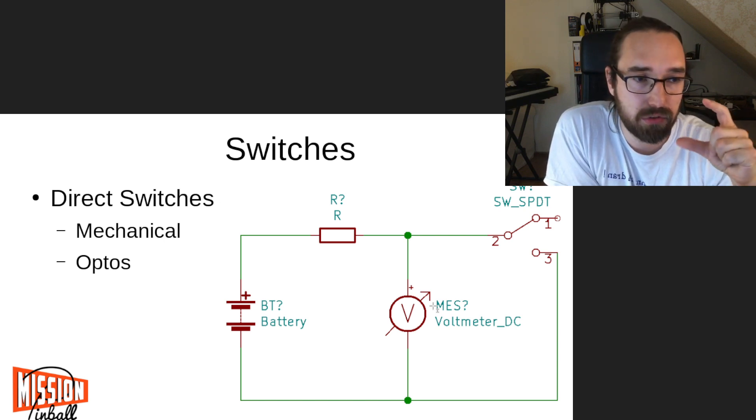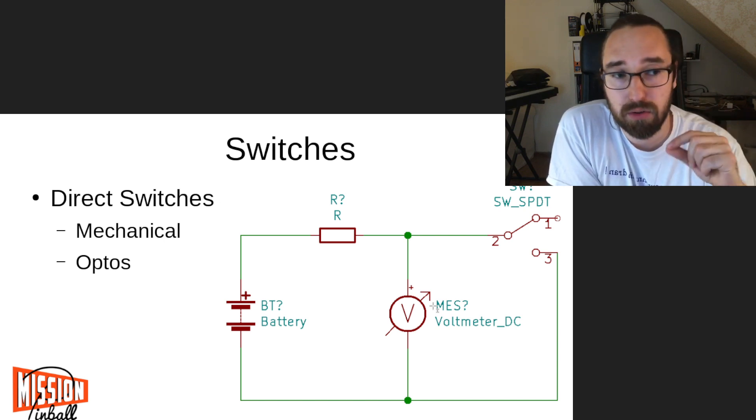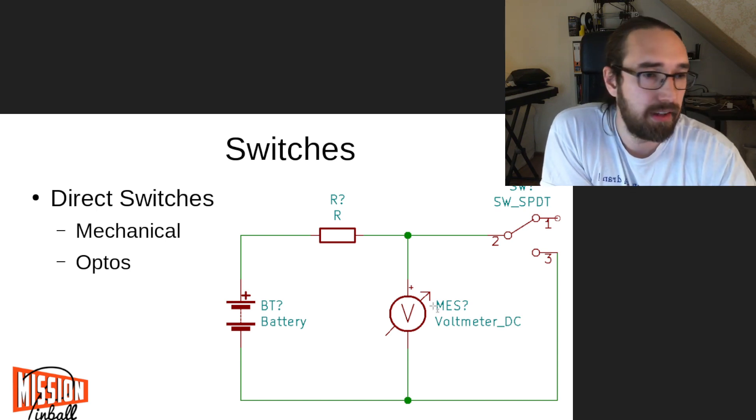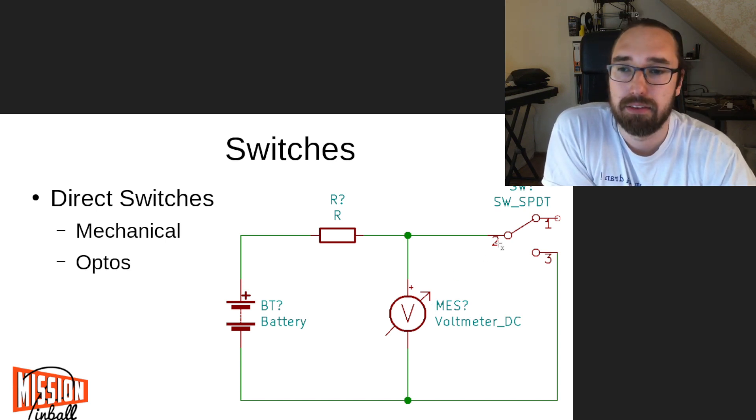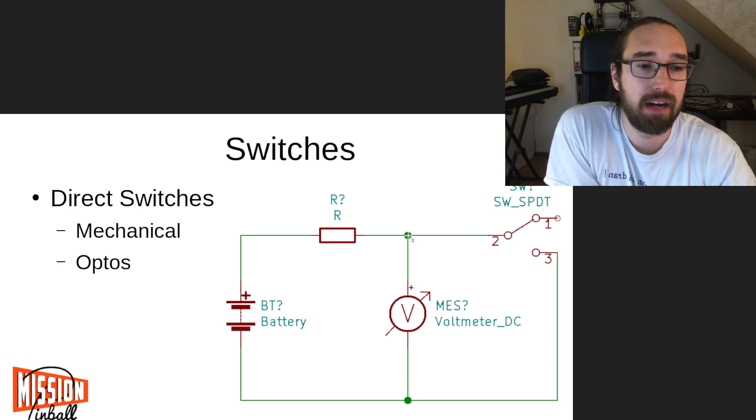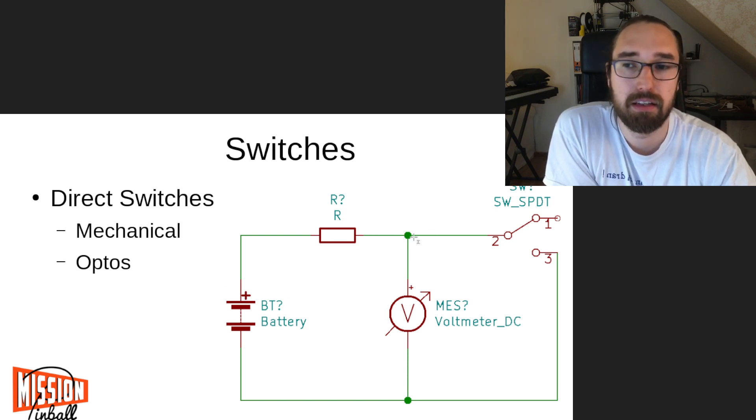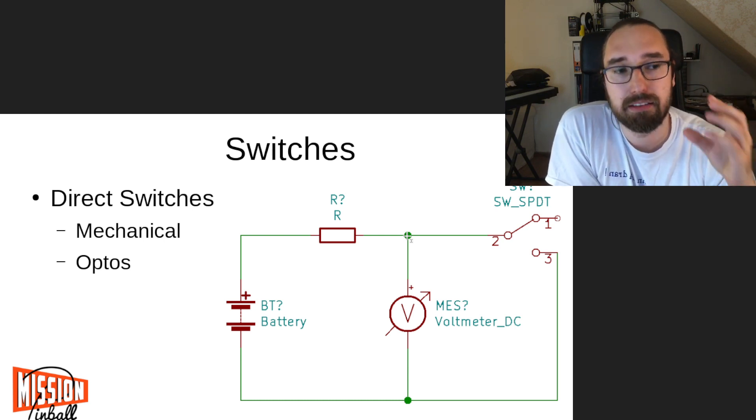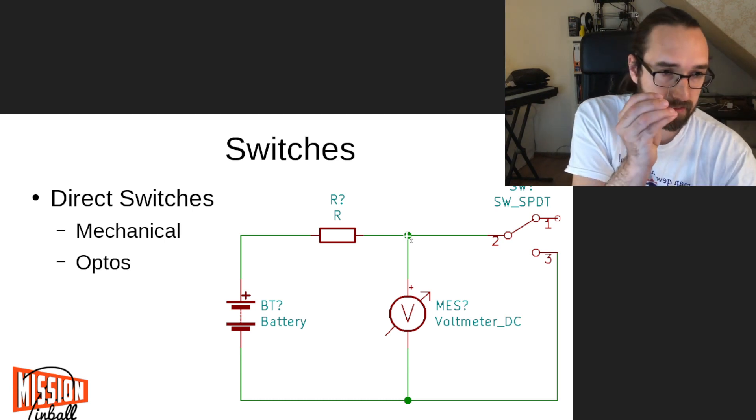And the input will detect this as low or in pinball active. If a switch is grounded, then it will be detected as active. That's how this works usually. This input will detect if the voltage at this point is below half the voltage of power supply typically. So if this is 12 volts, and if this drops below six volts, then the input will detect this as active.